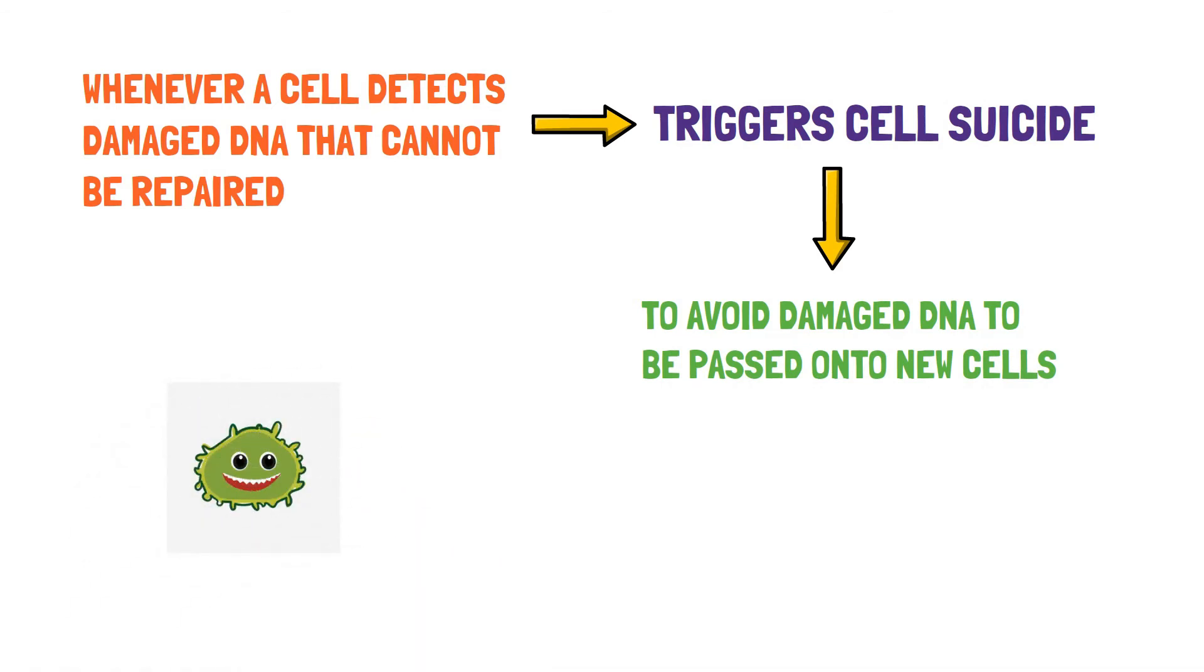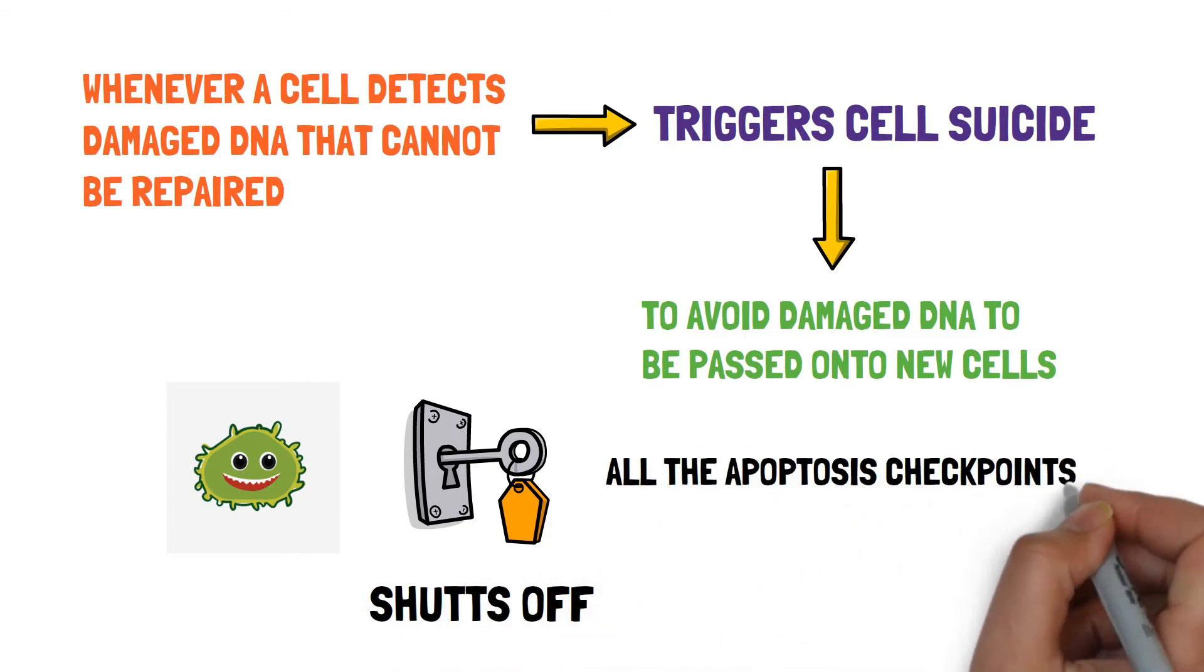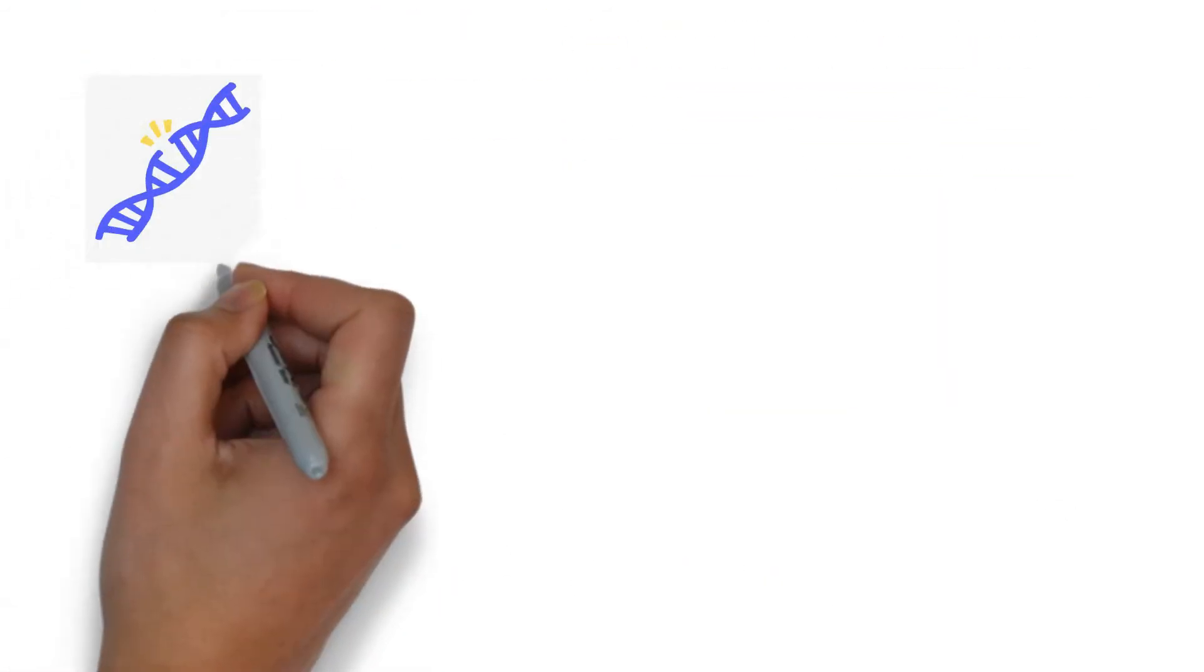Cancer cells shuts off this programmed cell death and its checkpoints and all the DNA that is damaged is passed on to the new cells.